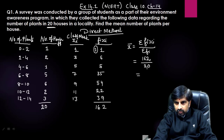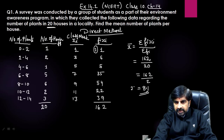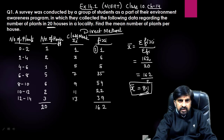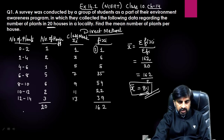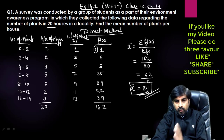Dividing 162 by 20 gives 8.1. So x̄ = 8.1, which is the mean number of plants per house. This is the direct method, and here the numbers were small enough to use it comfortably.